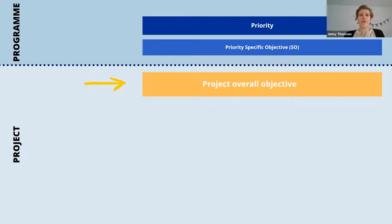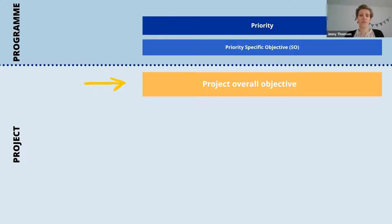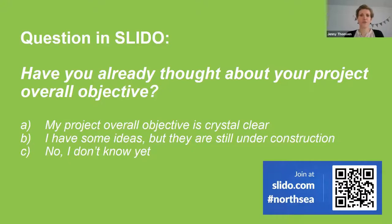Your project's overall objective must have a clear link with the program level. In addition, the overall objective is the starting point for all other parts of your project intervention logic. Since the project overall objective is the first thing you should think about, I'm very curious to hear whether you out there already have some ideas of your project overall objective — so please go to Slido.